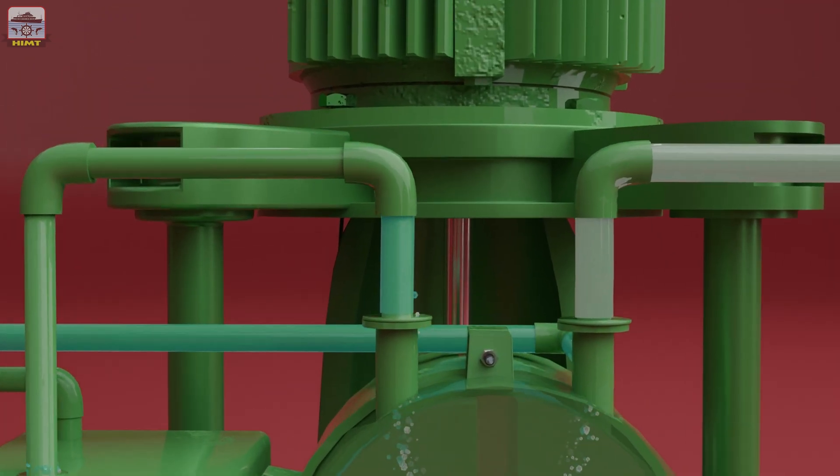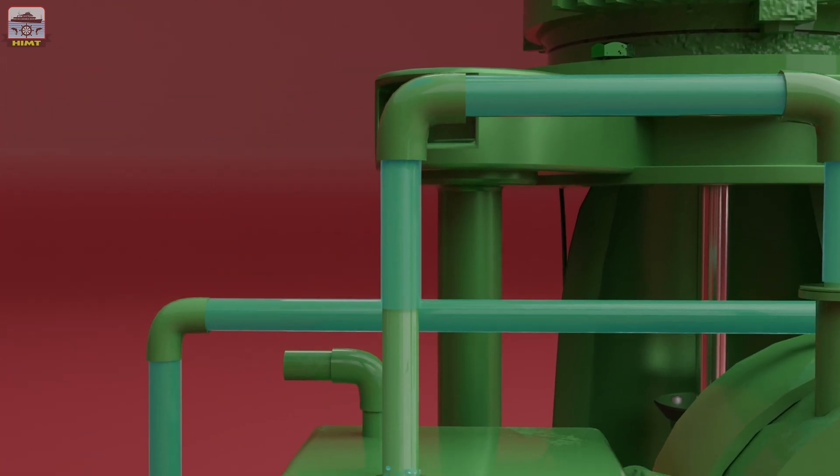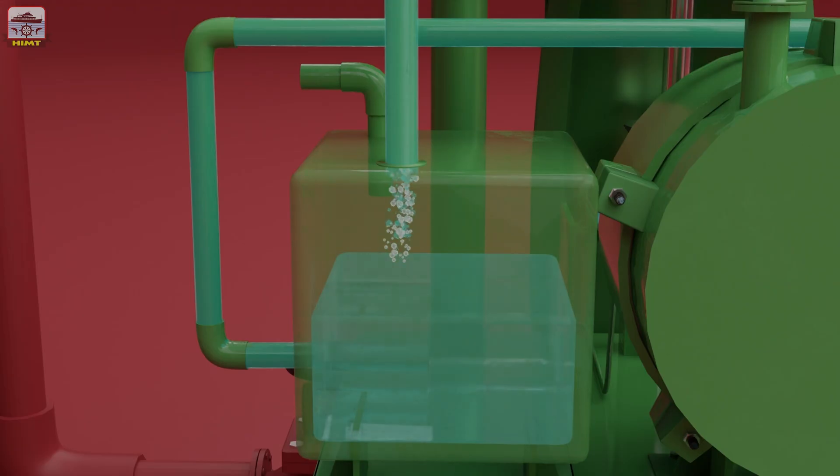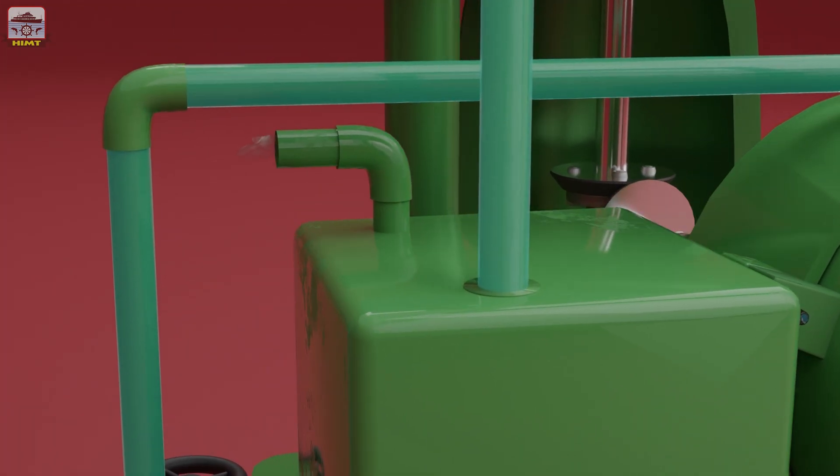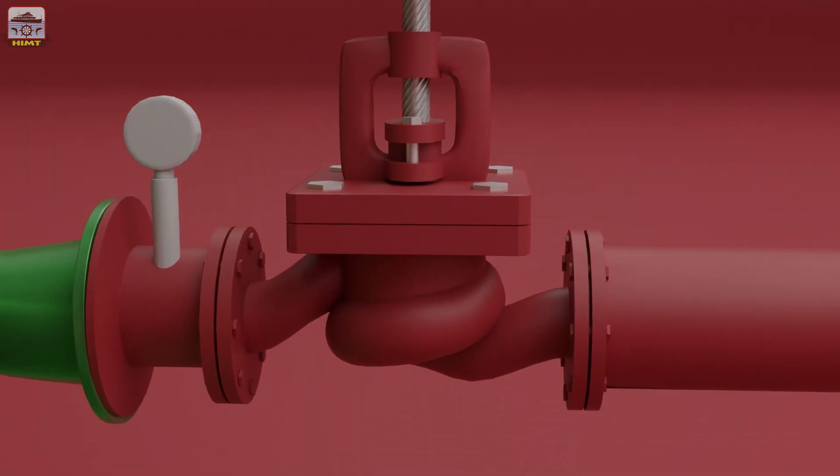This causes continuous suction of air from the main pump and discharge of air into the sealing water tank. As the air is continuously removed from the main pump casing, vacuum is created inside the main pump casing.